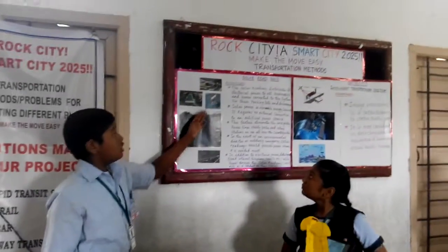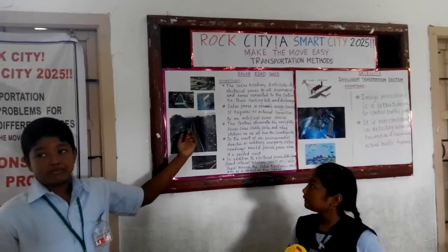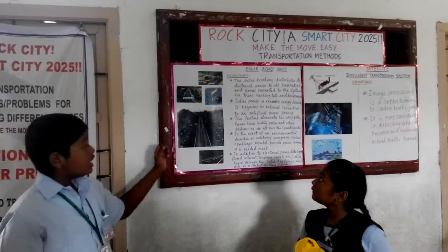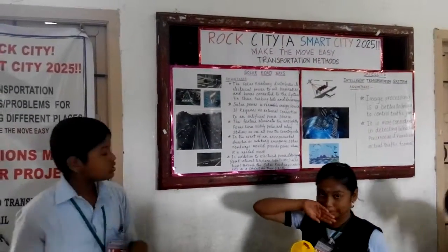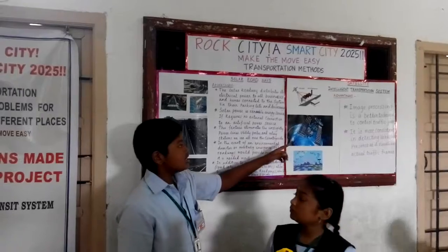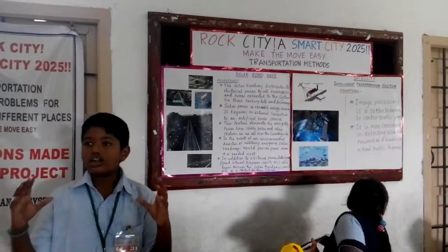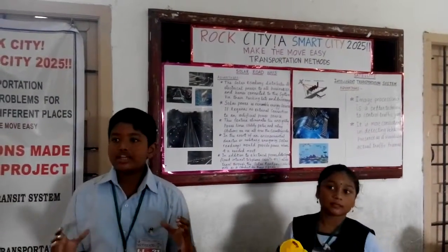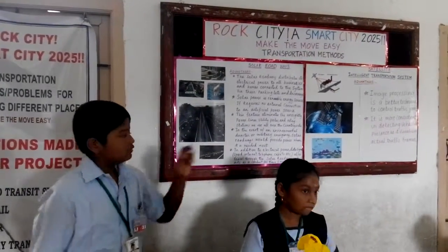We can use the solar road where when animals walk there, there will be a beam or a light which identifies that the animals are present, and in the transportation system we can see what is happening on that particular road or road service.